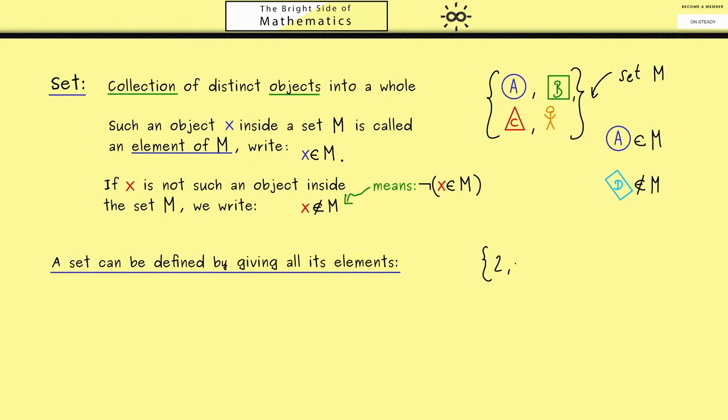So this is a set that has the number 2, the number 5 and the number 6 as elements. So inside the curly brackets we have a list of all the elements. And please note the order does not matter because we only need the element relation. So there is no order inside a set.